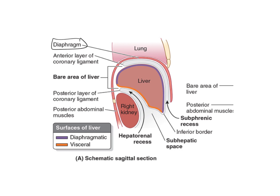In this picture we see the diaphragm as a red dome, and the liver below it. The purple area shows the diaphragmatic surface, and the orange line shows the visceral surface. Where the visceral surface and the diaphragmatic surface come together anteriorly, it forms the inferior border of the liver. The subphrenic recess is an extension of the peritoneal cavity that exists between the diaphragm and the anterior and superior aspect of the liver.